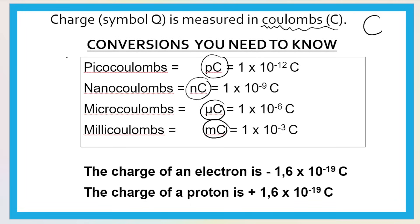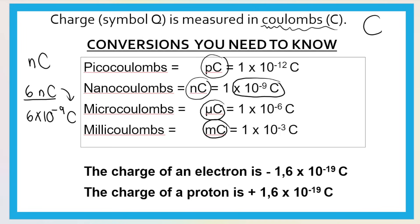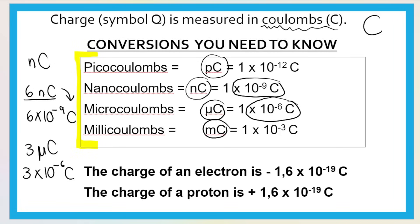If I give you charge in nanocoulombs, you need to know how to convert that to Coulombs. If the charge is six nanocoulombs, you convert by multiplying by 10 to the power of negative nine, giving you six times 10 to the negative nine Coulombs. If I give you three microcoulombs, you multiply by 10 to the negative six, giving three times 10 to the negative six Coulombs. This is not given on your formula sheet — you need to memorize it.